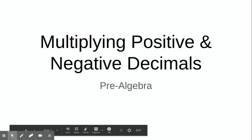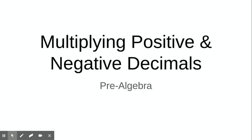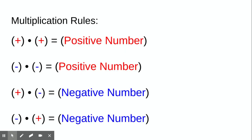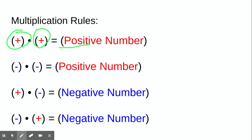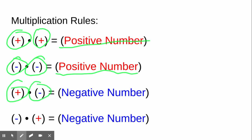Today for pre-algebra class we will be multiplying positive and negative decimals. Here's a review of our multiplication rules: if we multiply two positive numbers together we get a positive answer; if we multiply two negative numbers together our answer will also be positive; if we multiply a positive times a negative or a negative times a positive then our answer will be negative.